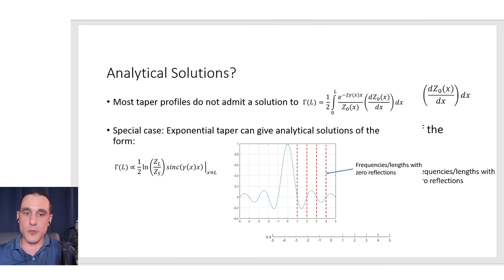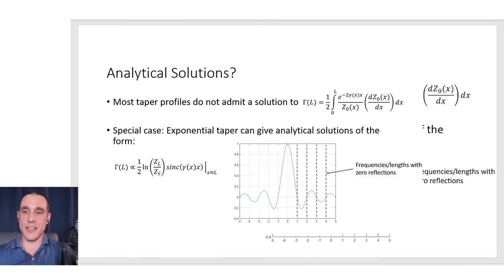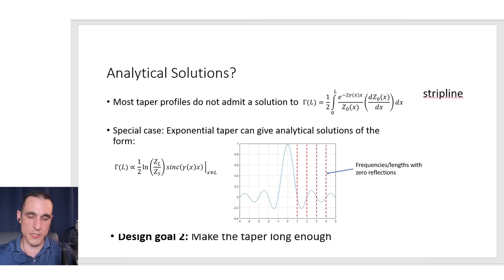If you know anything about the sinc function, there are certain values for its argument that give you an identical zero for the reflection coefficient. Those specific values occur periodically, as you can see in the graph. So the exponential taper has specific frequencies that will have very narrow passband but very high Q and very low reflection coefficient — it's really a wavelength multiplied by a length. The trade-off is that you have very narrow bandwidth, and it's more difficult to design in your CAD tools because you have to trace out this exponential shape precisely. That's why I want to focus on the linear taper — it's very easy to draw and you can still get very good results.